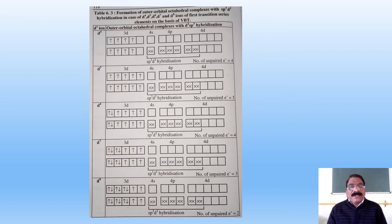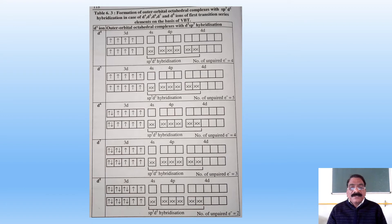Similarly for d7, it does not use the 3d orbital but uses the 4d orbital, so there are three unpaired electrons both before and after hybridization. The same is the case for the d8 system: there are two unpaired electrons in the ground state, the 3d orbital is not used for bonding, the 4d orbital is used and sp3d2 hybridization is shown, giving two unpaired electrons.